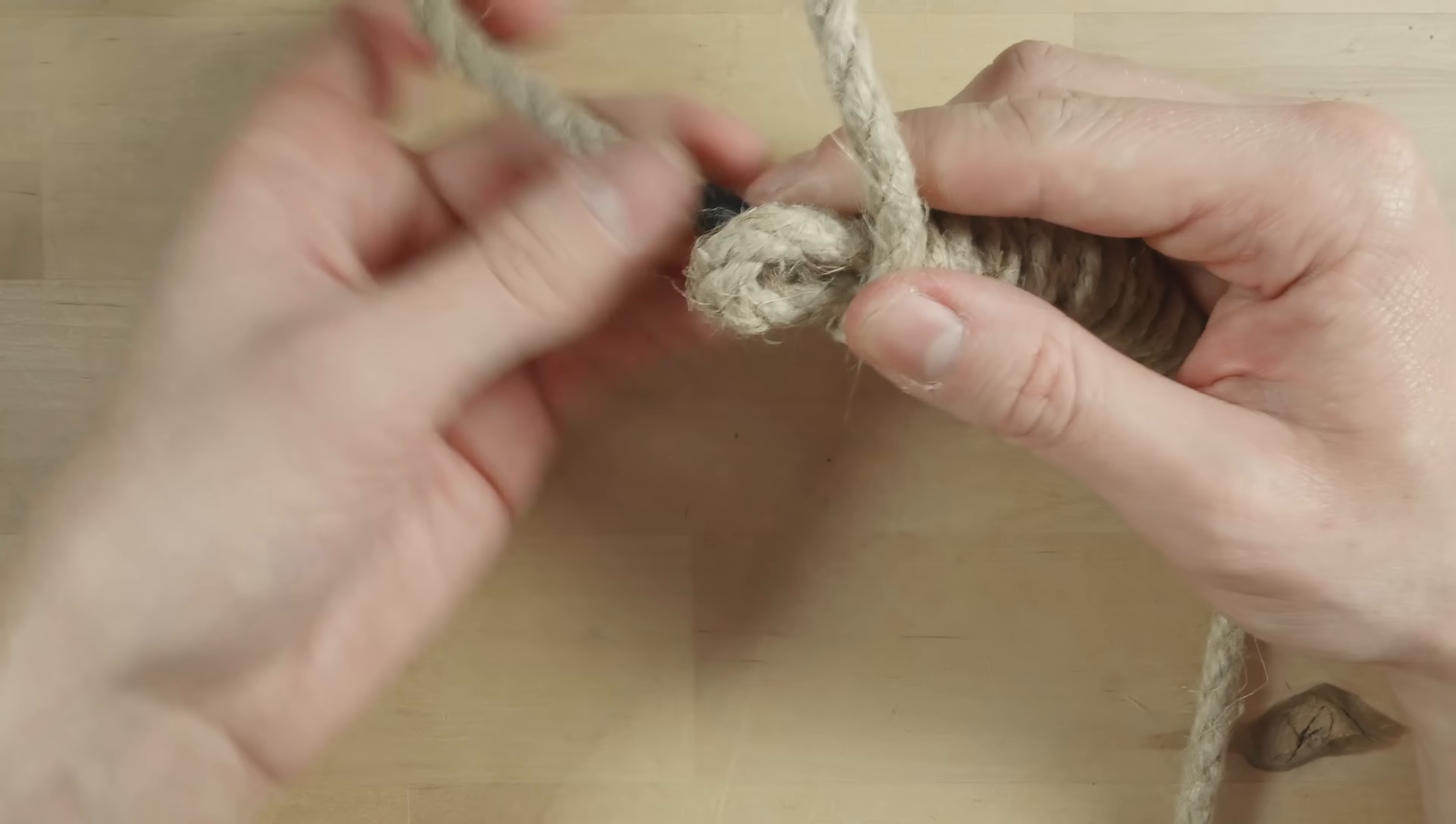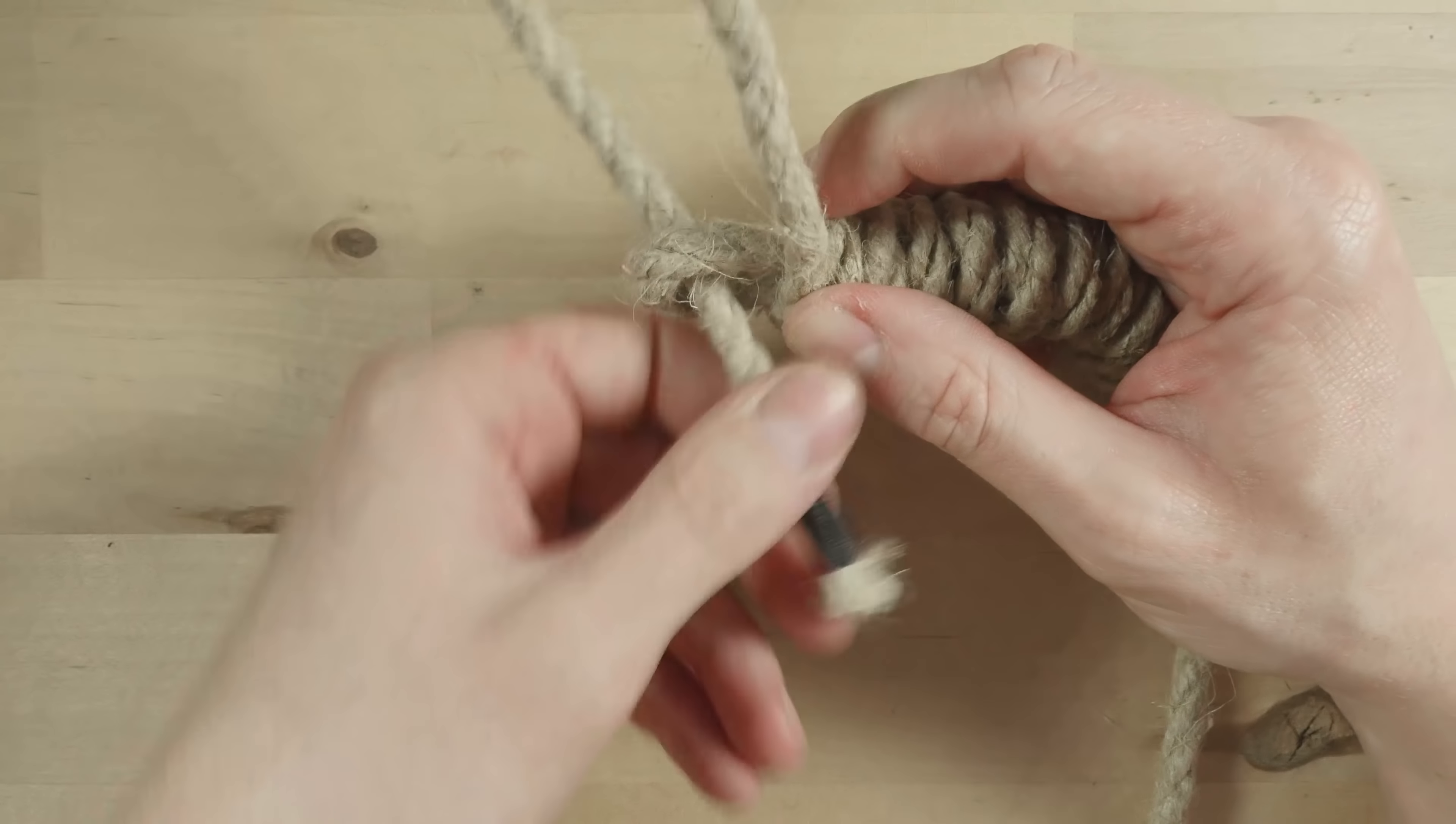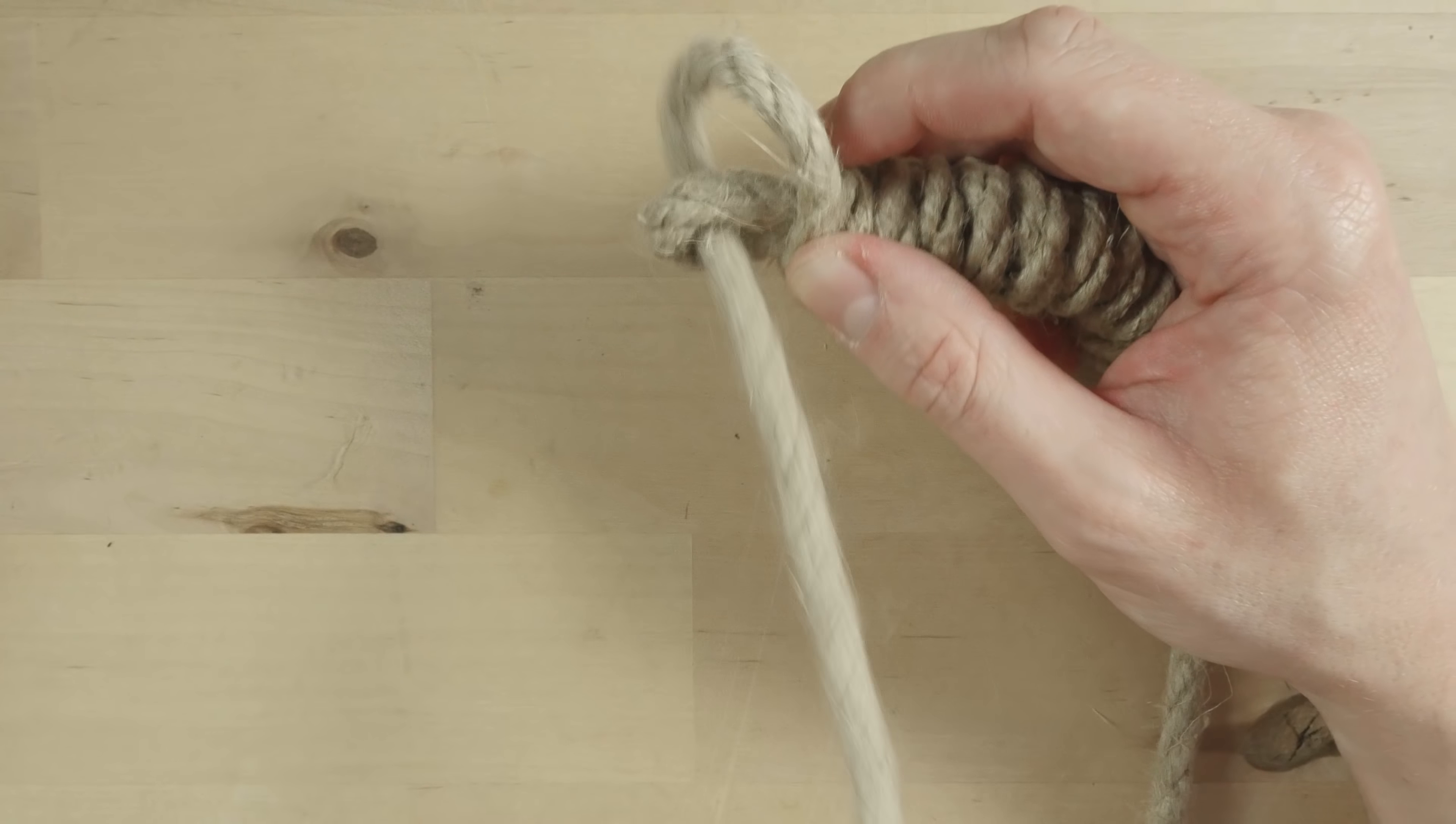Take the knot, take the end and pass it through the bight bottom up. Pull on the standing end to tighten up the knot. So this is the basic form.